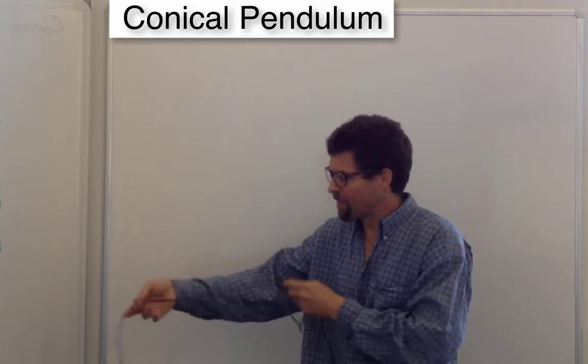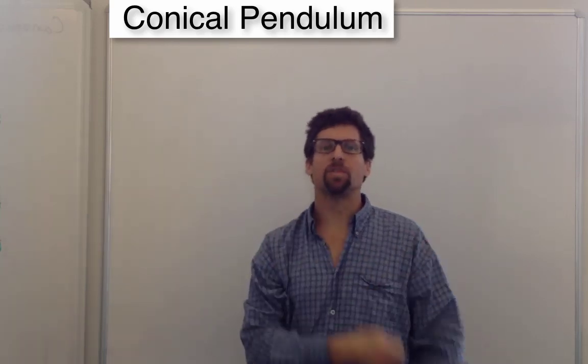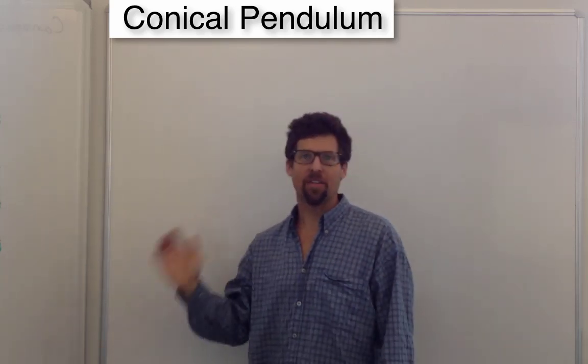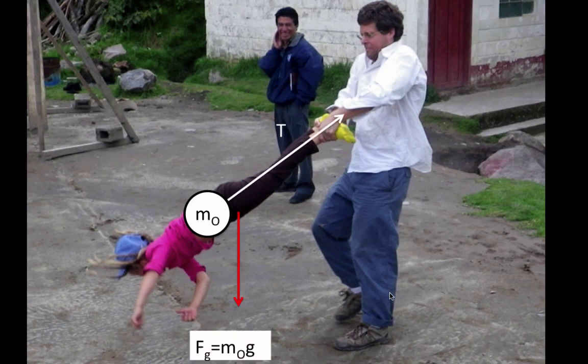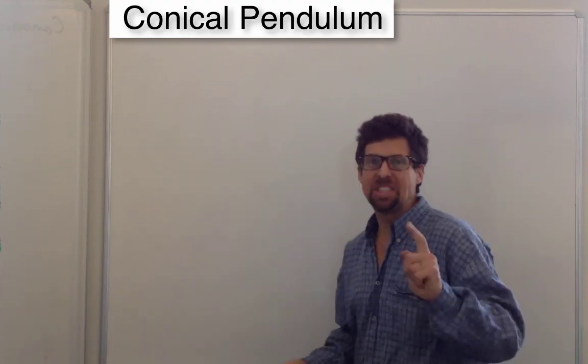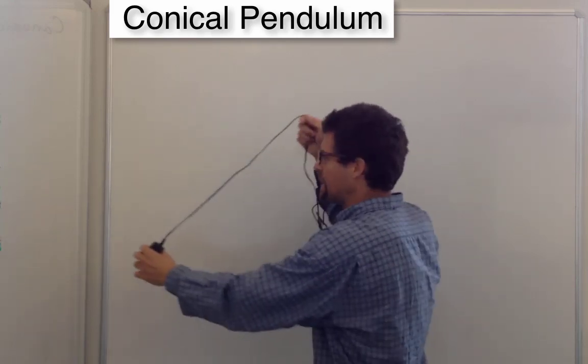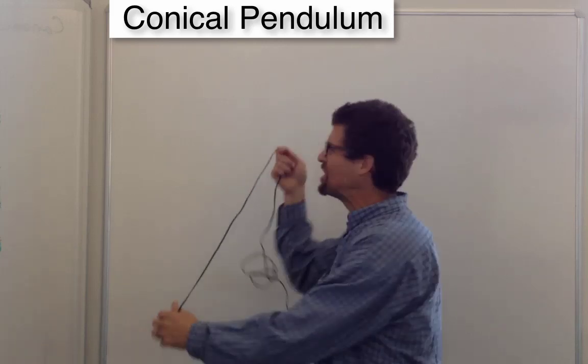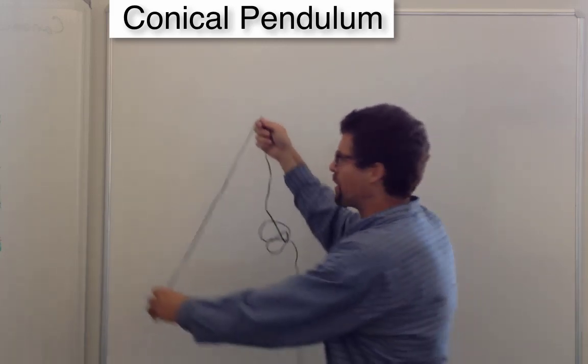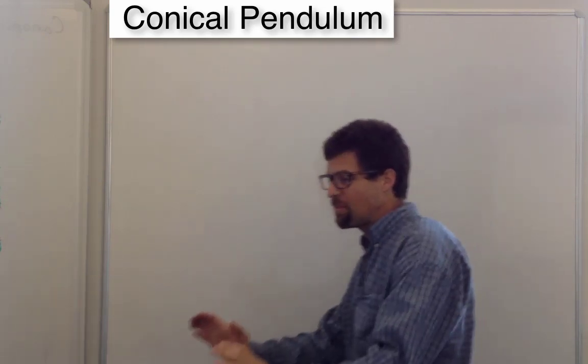The conical pendulum is when we have a mass at the end of a string and we're spinning it around. You've done this before. This is the tether ball. This is swinging your little girl around by your ankles. This is the same as when we had gravity and tension interacting when we were accelerating in a car and we were looking at the fuzzy dice hanging from the rear view mirror as we accelerated in the car.